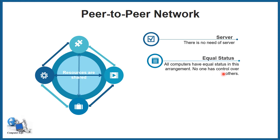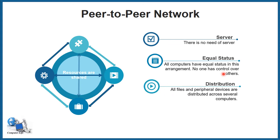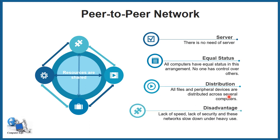Each computer has the potential of a server to share data files. All files and peripheral devices are distributed across several computers, making work efficient. The disadvantages include lack of speed, since each computer is performing multiple tasks which may reduce speed. There is also lack of security, as all computers can access information, which may violate security.